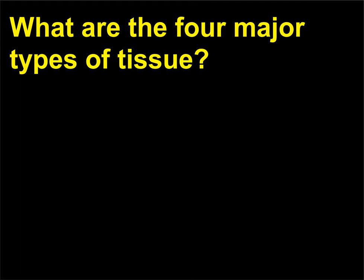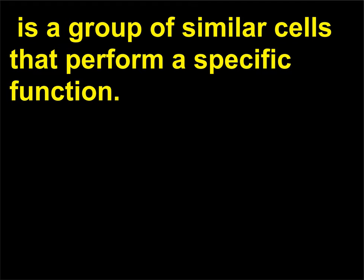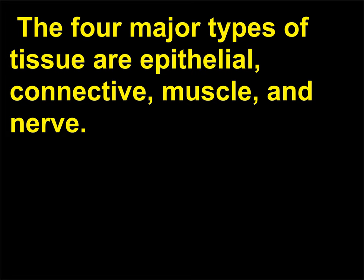What are the four major types of tissue? A tissue (from the Latin texere, meaning to weave) is a group of similar cells that perform a specific function. The four major types of tissue are epithelial, connective, muscle, and nerve.